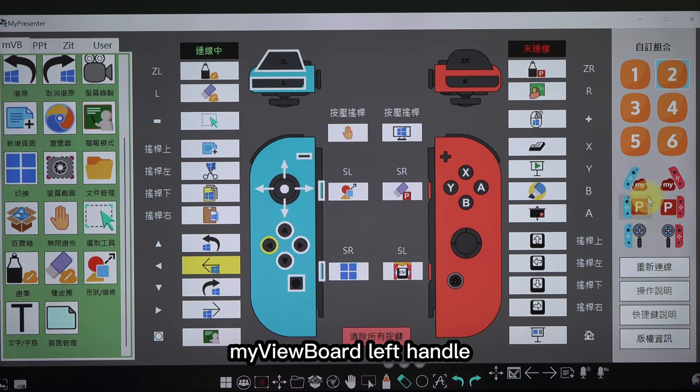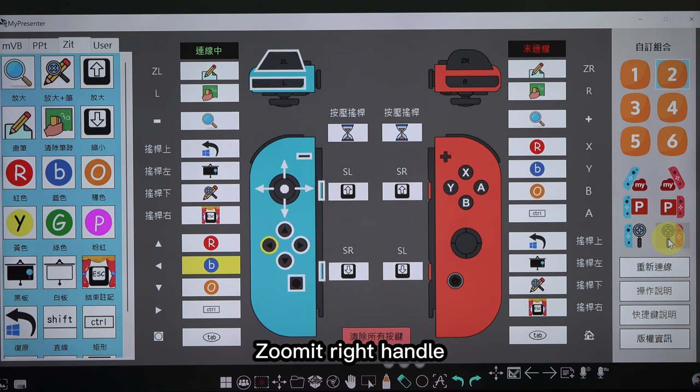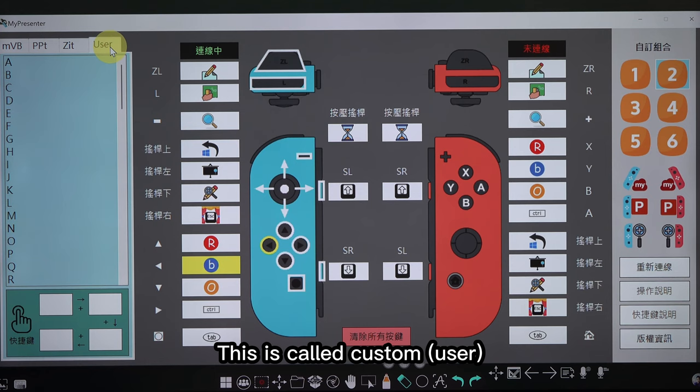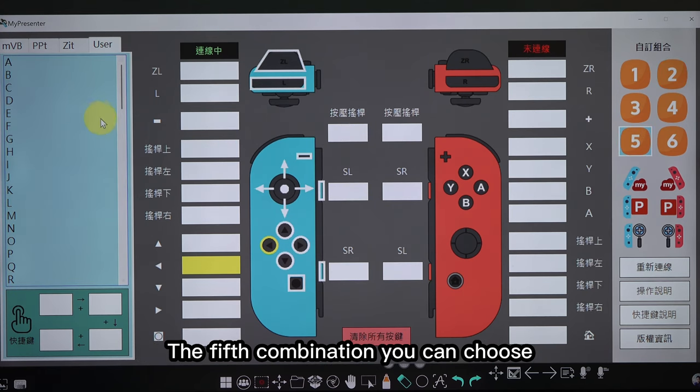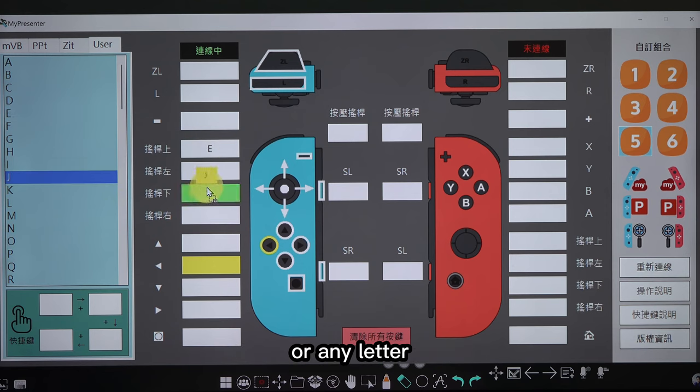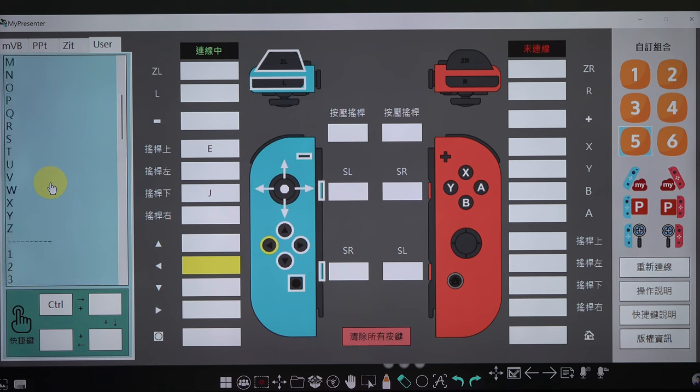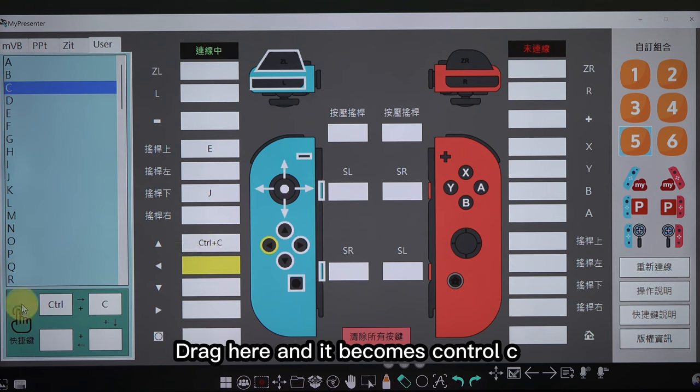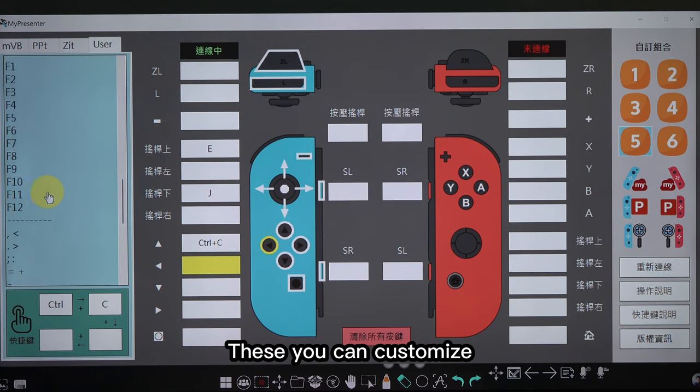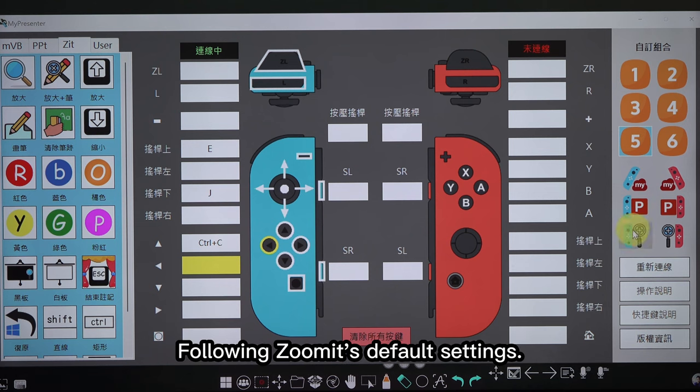Here are six groups of custom function. My View Board left handle, My View Board right handle, PPT left handle, PPT right handle, Zoom it left handle, Zoom it right handle. This is a very useful tool, this is called custom user. Let us clear, first press custom user. For example, I choose the fifth combination. The fifth combination, you can choose, for example, an eraser. The eraser shortcut key is A, or any letter. We can also combine, for example, commonly used copy and paste, Control C. Drag here and it becomes Control C. These you can customize. There are also Zoom it that many teachers like to use. Zoom it is also very useful. Following Zoom it's default settings, first of all, if I press this key.